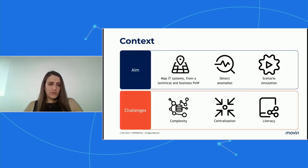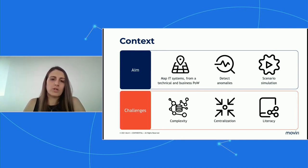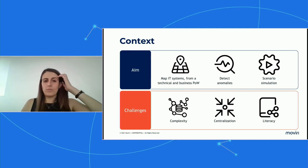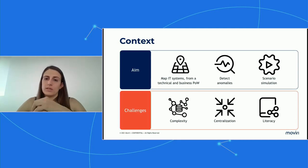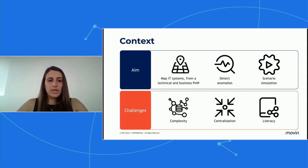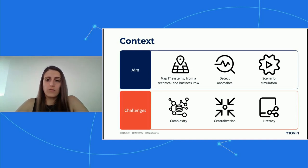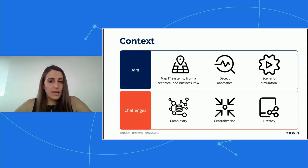Let's start with a little bit of context. Among the many needs of our customers, we have identified three which are, in our opinion, the most important and most frequent. The very first one is the need to map all the IT systems from different points of view — starting from the bare metal up to the business processes, and also mapping the customers of the applications themselves. The second need is anomaly detection.